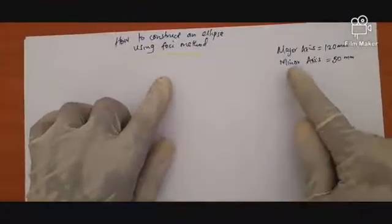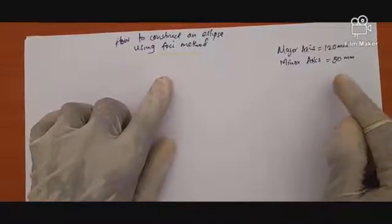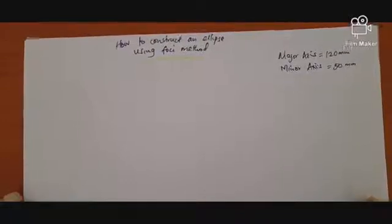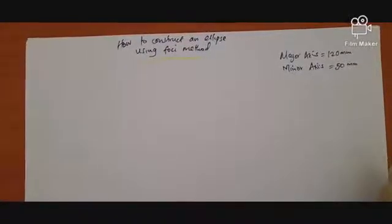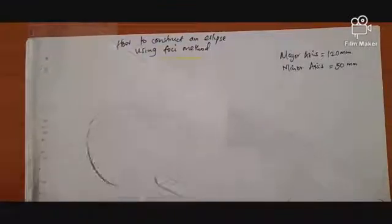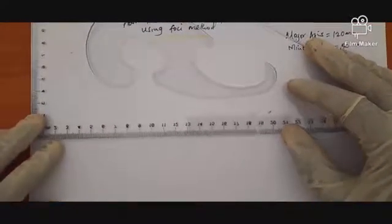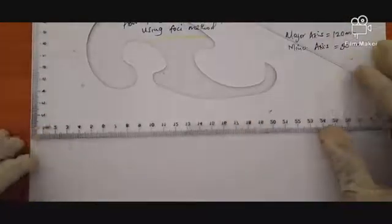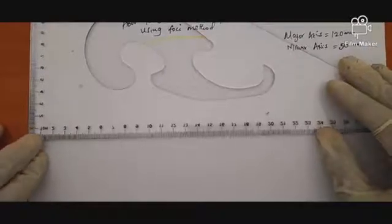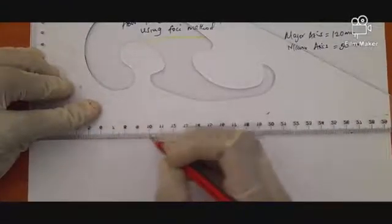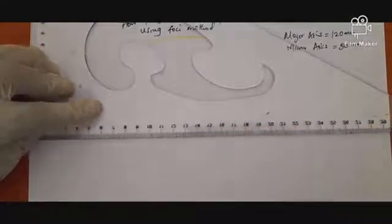To construct an ellipse using the FOSSI method, we need the major axis which is 120mm and the minor axis which is 50mm. We are going to construct our major axis first, then our minor axis. Using the straight edge, we start the construction of our major axis, align the paper edge, and draw our axis.